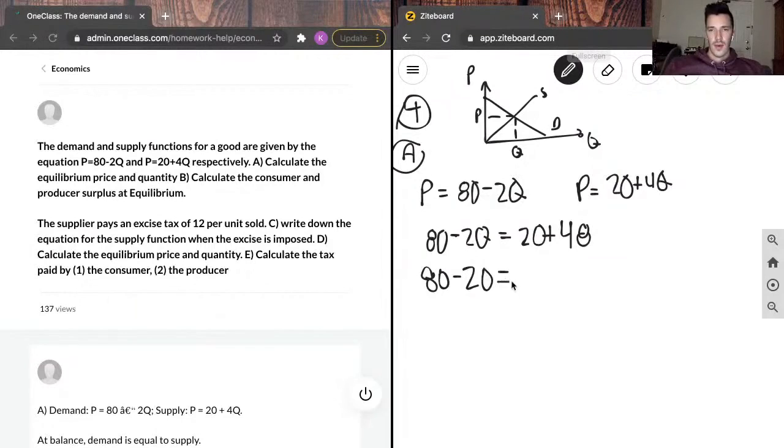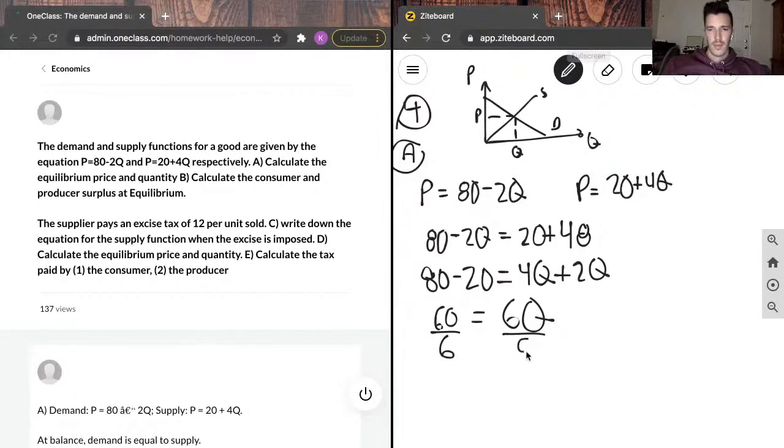It's going to equal 4Q. Add 2 to both sides, plus 2Q. This comes out to 60 equals 6Q. We can divide both sides by 6. And we'll get that Q star equals 10.